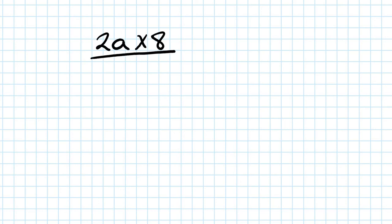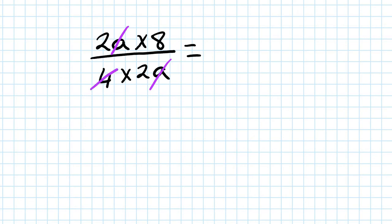Next one: 2a times 8, all over 4 times 2a. The 'a' on top and bottom cancel out. Then 4 times 2 is 8, so this 2 can cancel with the 8, leaving 2 over 1, which is 2.